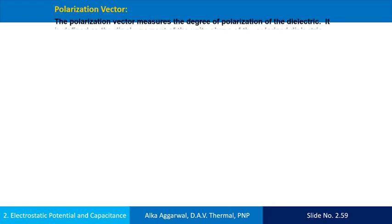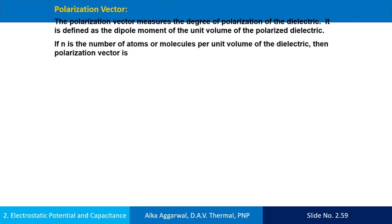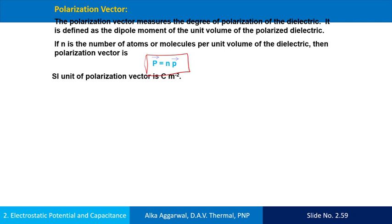Polarization vector. The polarization vector measures the degree of polarization of the dielectric. It is defined as the dipole moment of the unit volume of a polarized dielectric. If En is the number of atoms or molecules per unit volume of the dielectric, then the polarization vector is given accordingly. The SI unit of the polarization vector is Coulomb per meter square.